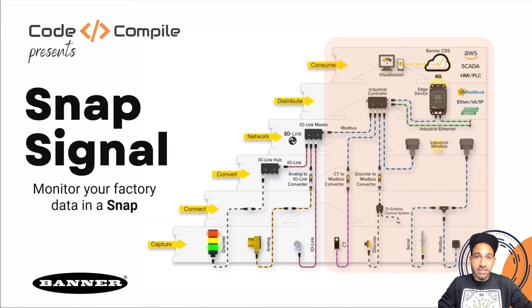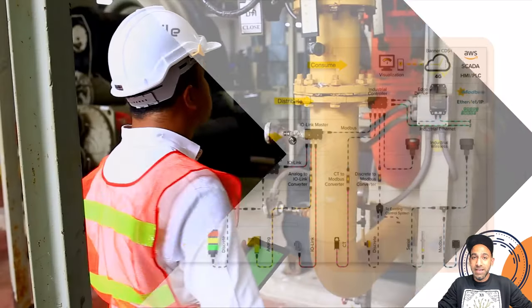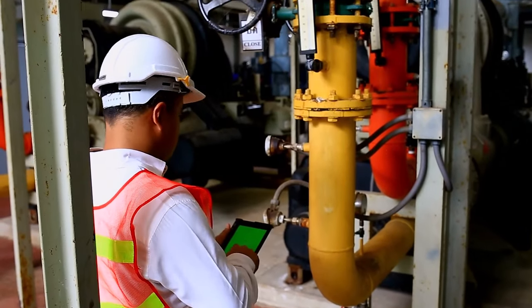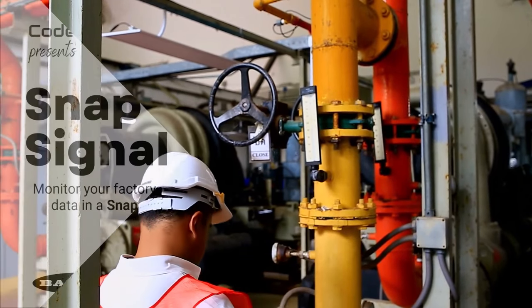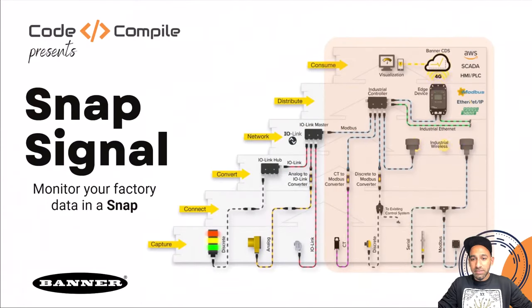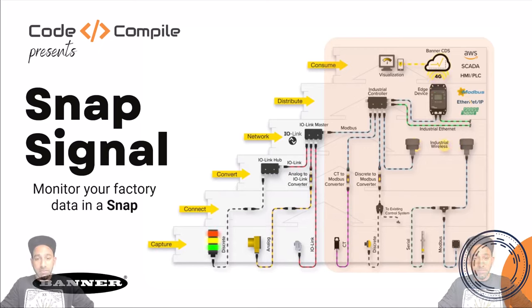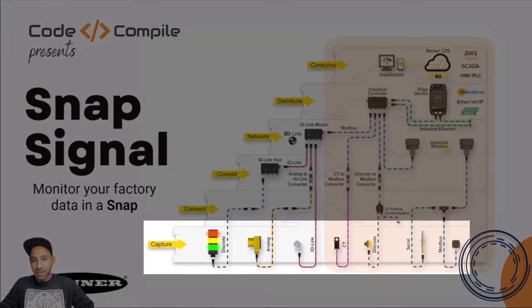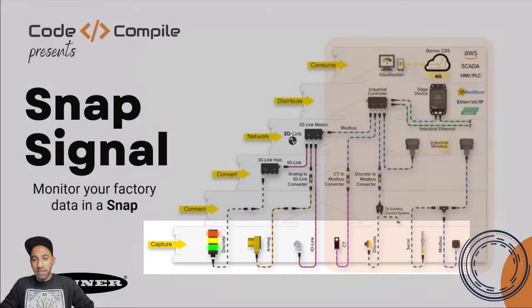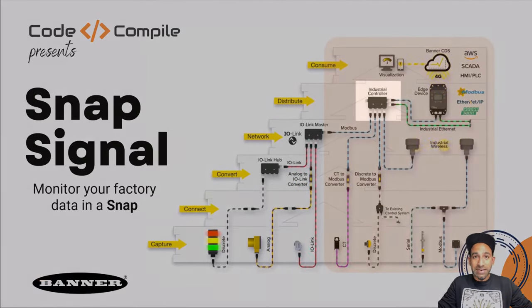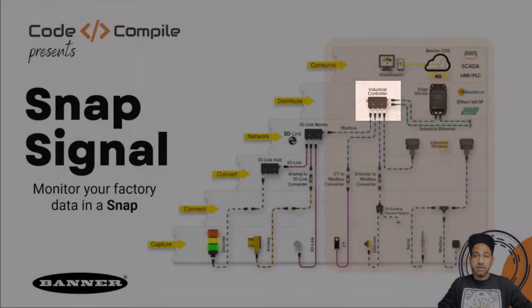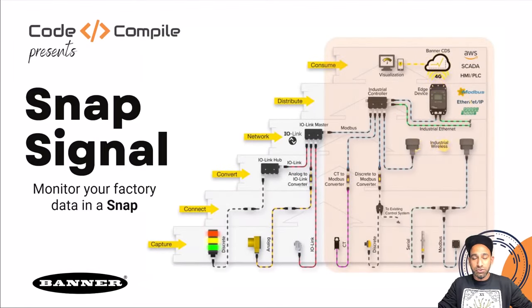This is a very interesting concept for those industries and processes in which you want to fetch data from the factory and send it to the cloud. If you see my diagram here, you can see that we have a bunch of sensors on the bottom layer — discrete, analog, IO-Link, current transformer — and we are fetching the signal from the sensor and giving it to an industrial controller, which is further sending the data to the cloud.